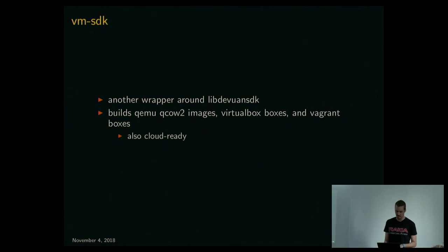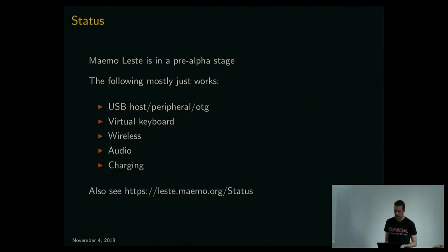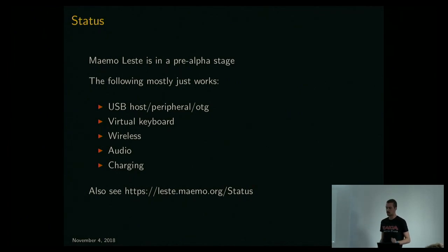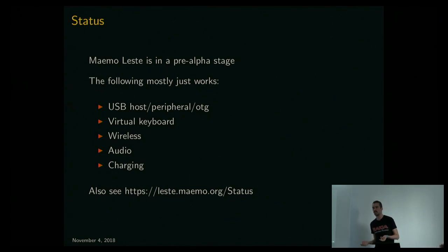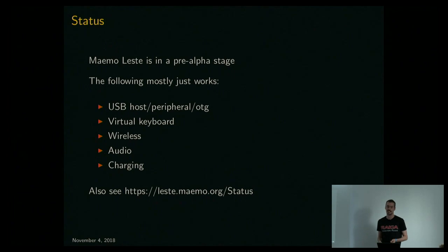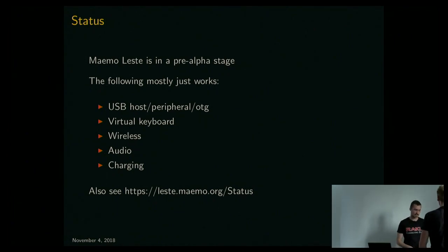The ARM SDK is probably one of the largest knowledge bases for building kernels and bootloaders for all kinds of ARM devices. The VM SDK builds QCOW2 and VirtualBox images, which are useful for development if you don't have phones — you can build or debug a package in a virtual machine, and it's cloud-ready so you can install Maemo Leste on Digital Ocean or OVH and use VNC remotely.